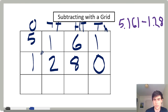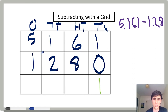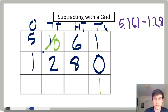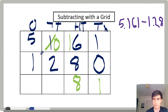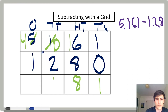One thousandth minus zero thousandths is one thousandth. Six hundredths minus eight hundredths — we're going to have to borrow. I'm going to the tenths place, take one tenth and turn it into ten hundredths. I now have sixteen hundredths. Sixteen minus eight is eight. Zero tenths minus two tenths — I'm going to borrow one whole and turn it into ten tenths. Ten tenths minus two tenths is eight tenths.